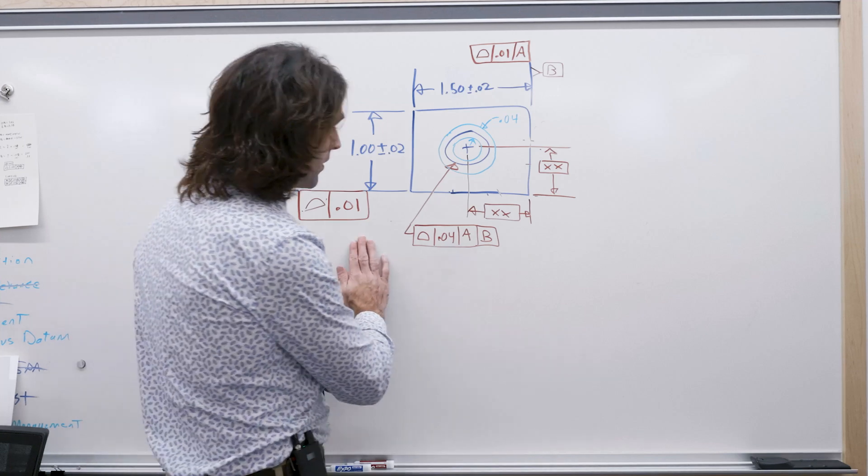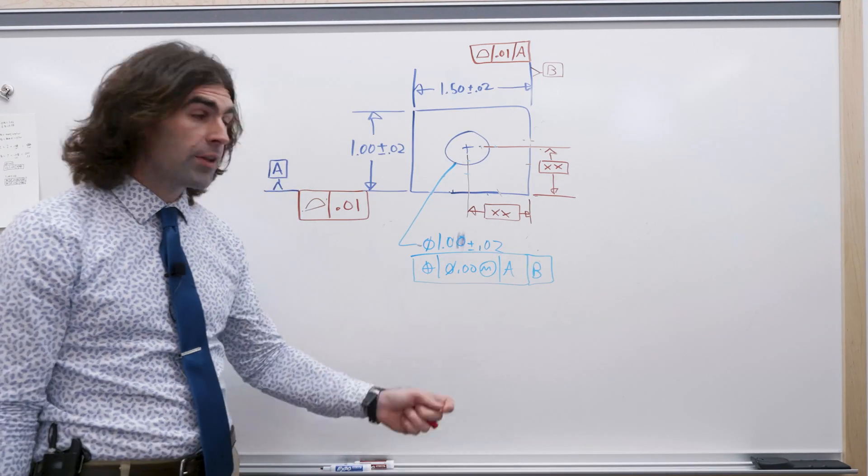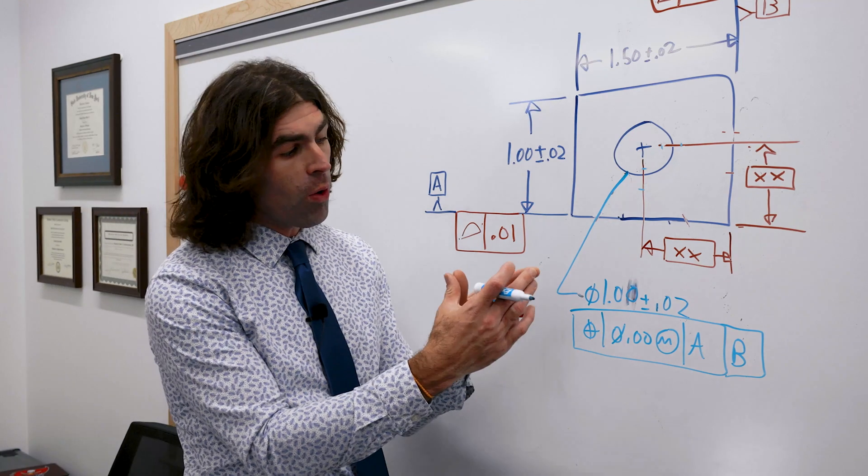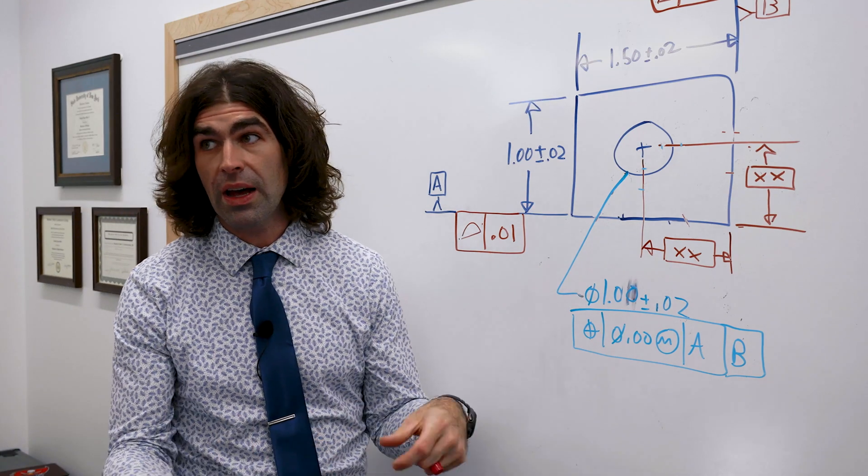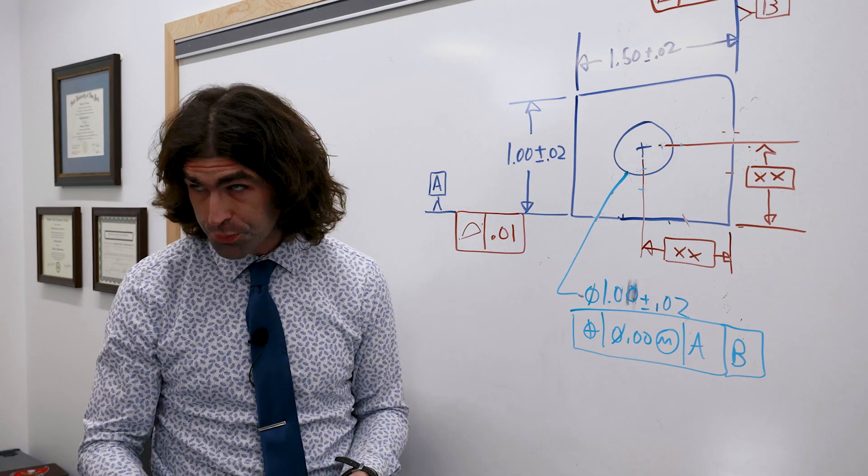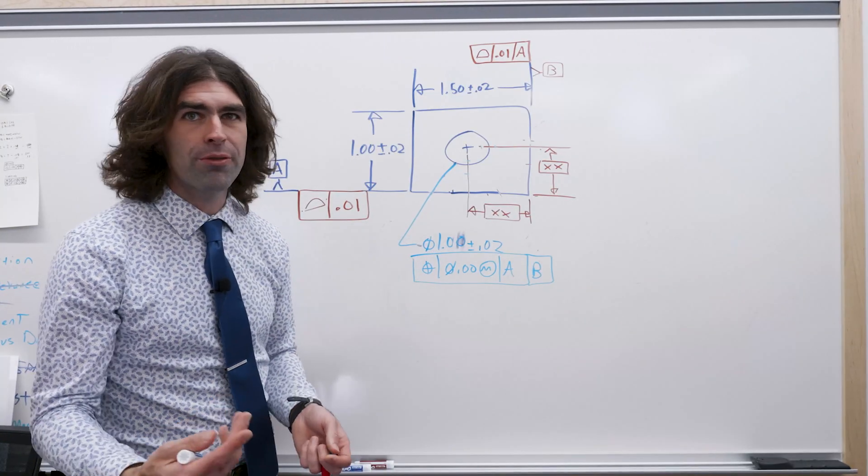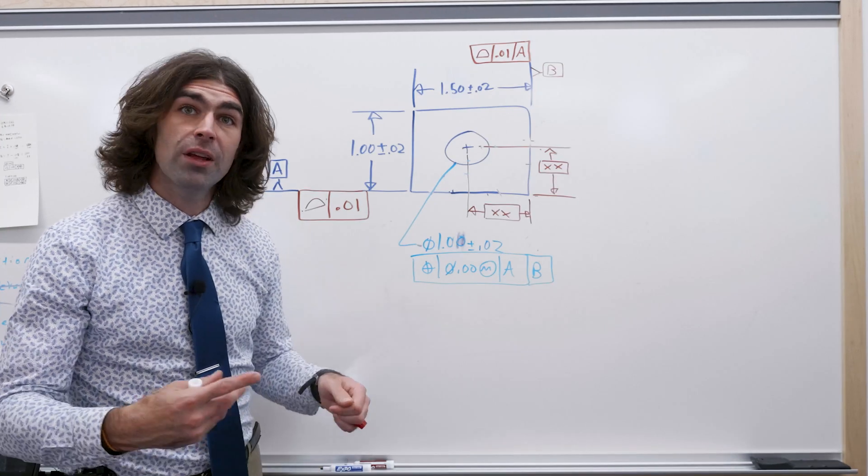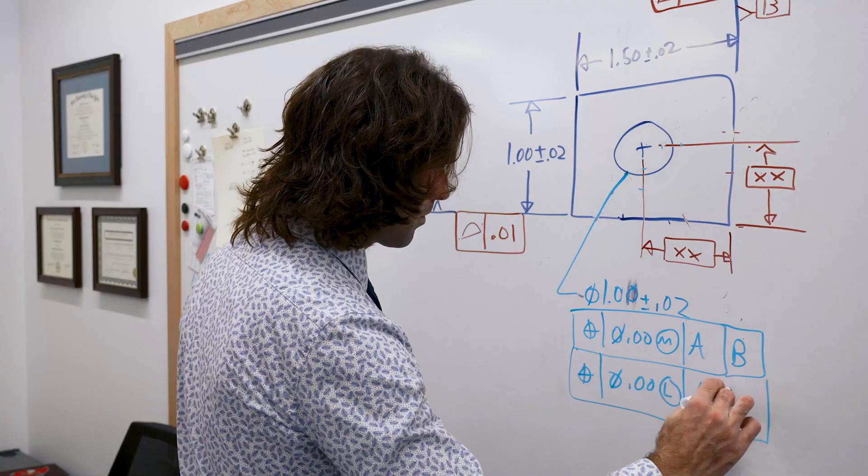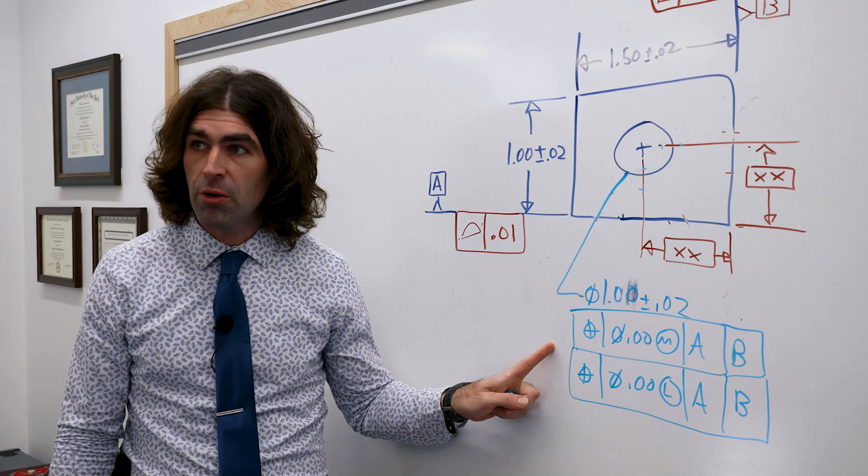Now if you use position, you have the ability to use the MMC modifier. This allows, if the hole gets bigger, you get more positional tolerance. Now you don't always need MMC, but it is available. And just food for thought, if you remember that profile for this hole, if I didn't write it before, it's a one-inch hole, a profile of 40 thousandths on a one-inch hole mathematically means the same thing as a one-inch hole plus or minus 20 thousandths, zero MMC, zero at LMC.